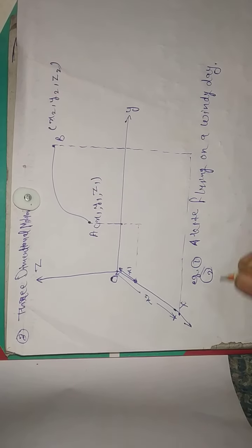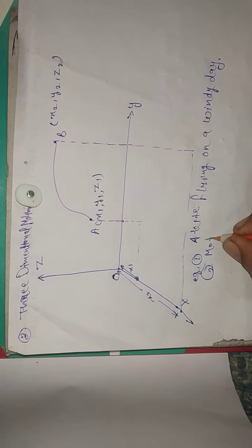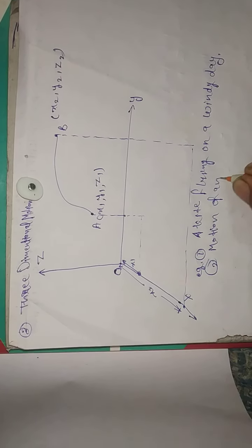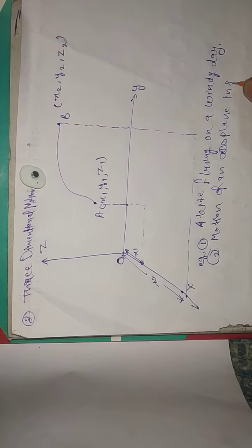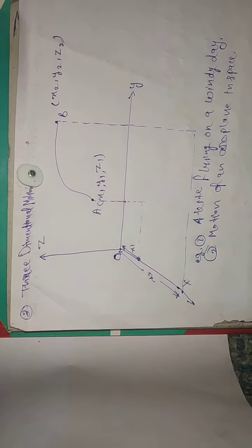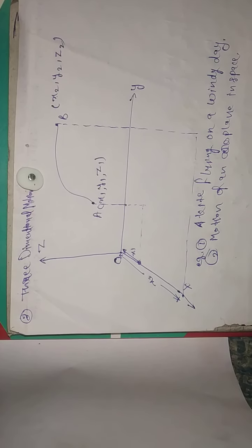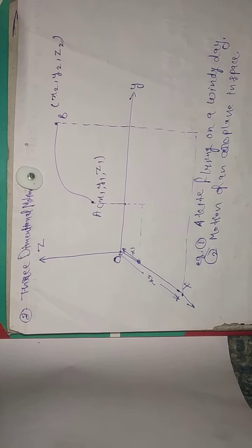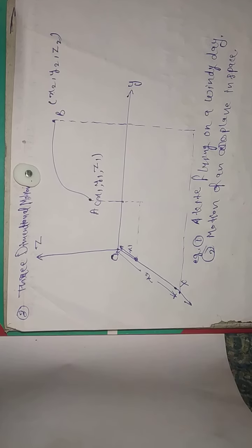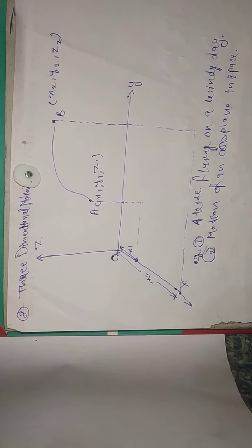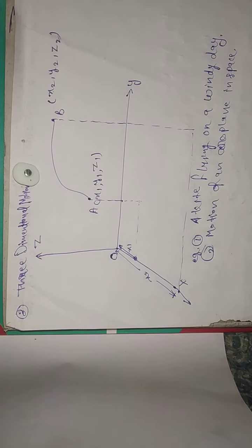Example two is the motion of an aeroplane in space. You can also find many more examples, such as the motion of small particles in the wind and the motion of smoke particles in the wind. Many more such examples can be found in nature.